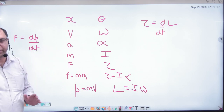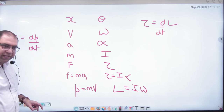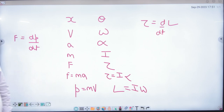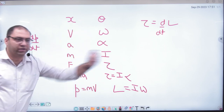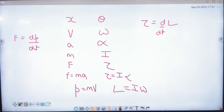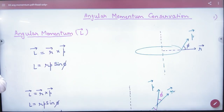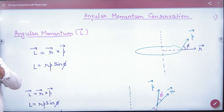We have done the whole of Physics in linear motion, and now we are doing the angular equivalent. Angular momentum is represented by L, and L is a vector.